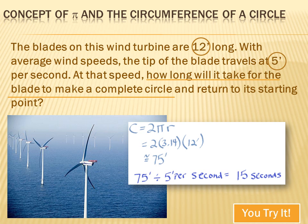So, the circumference equals 2 pi r, or approximately 75 feet. In other words, it's 75 feet all the way around the path that the tip of that blade travels. And 75 feet divided by 5 feet per second, the speed that the tip of that blade is traveling around the circle, equals 15 seconds. So, it would take about 15 seconds for that blade to go all the way around the turbine.